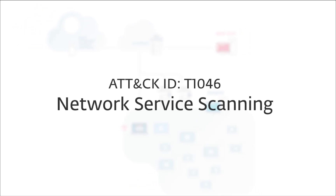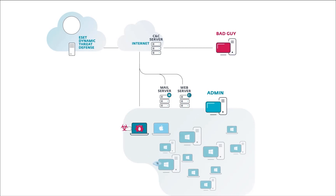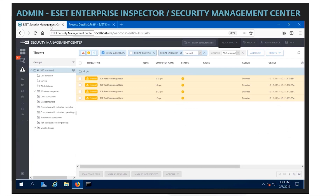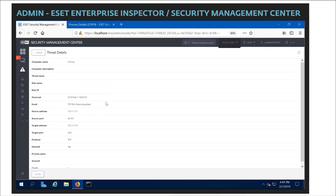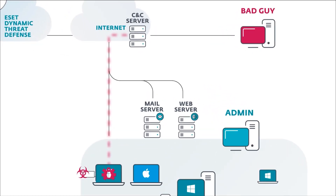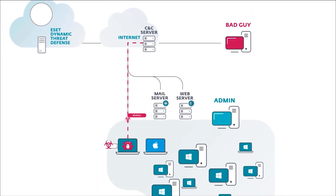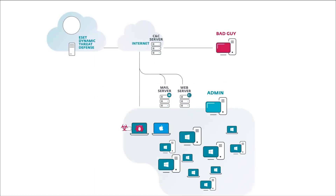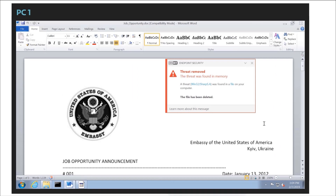NMAP is a legitimate tool, in this case abused by the attacker. As such, it doesn't trigger a DNA detection by default, but the network scan is visible in ESET Enterprise Inspector. If we click to see the details, we can see the network addresses and ports being scanned. Afterward, the malware would download a second component: the infamous Mimikatz tool, used to extract Windows credentials. This is detected by a DNA detection in ESET's advanced memory scanner.